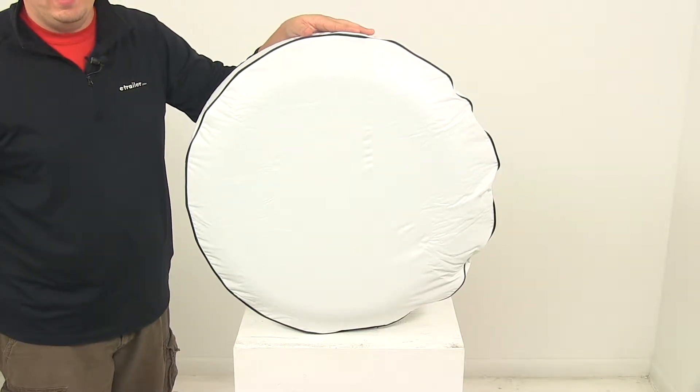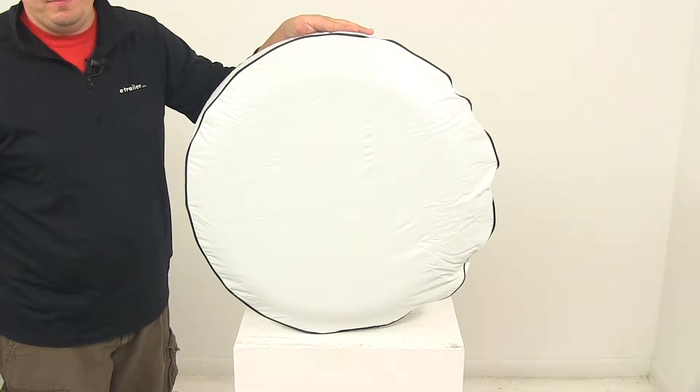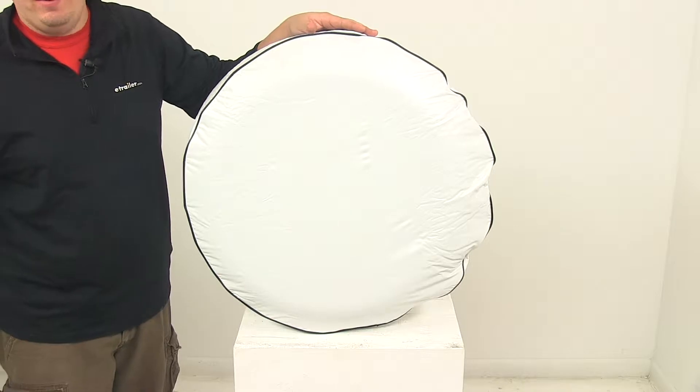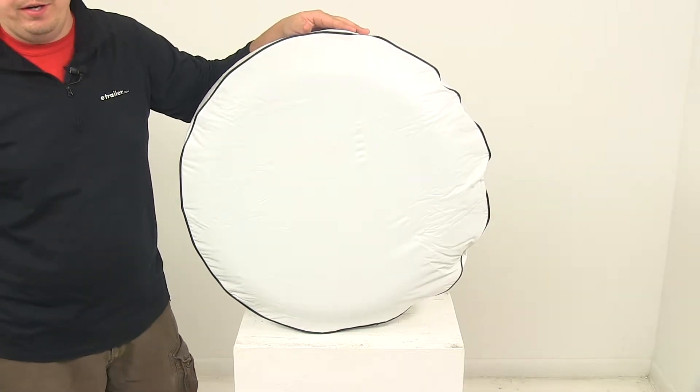Today we're taking a look at the Classic Accessories Model 5 Custom Fit Spare Tire Cover. It's snow white in color and designed to fit tires that have an outer diameter of 28 inches to 29 inches.